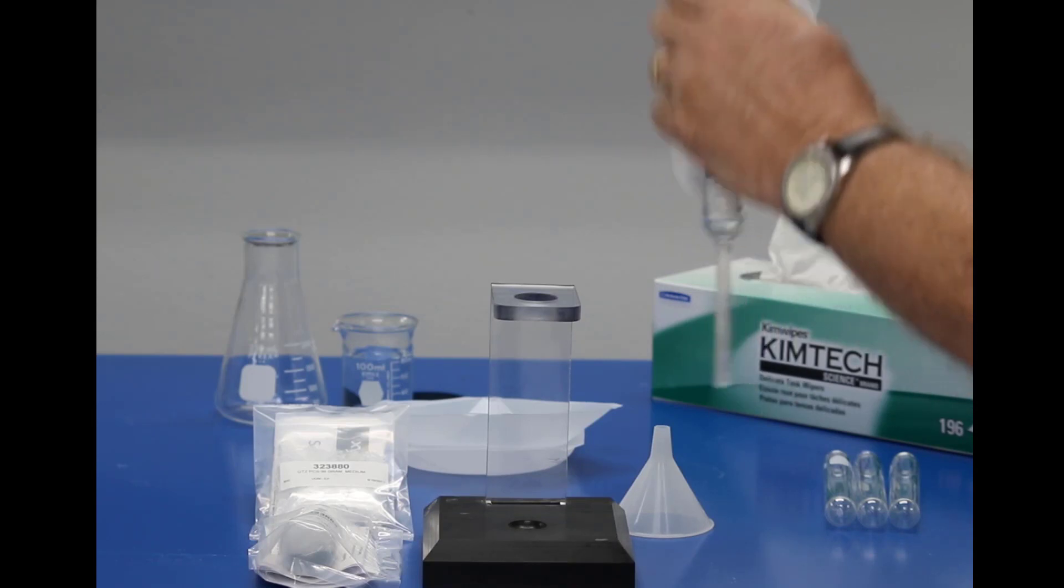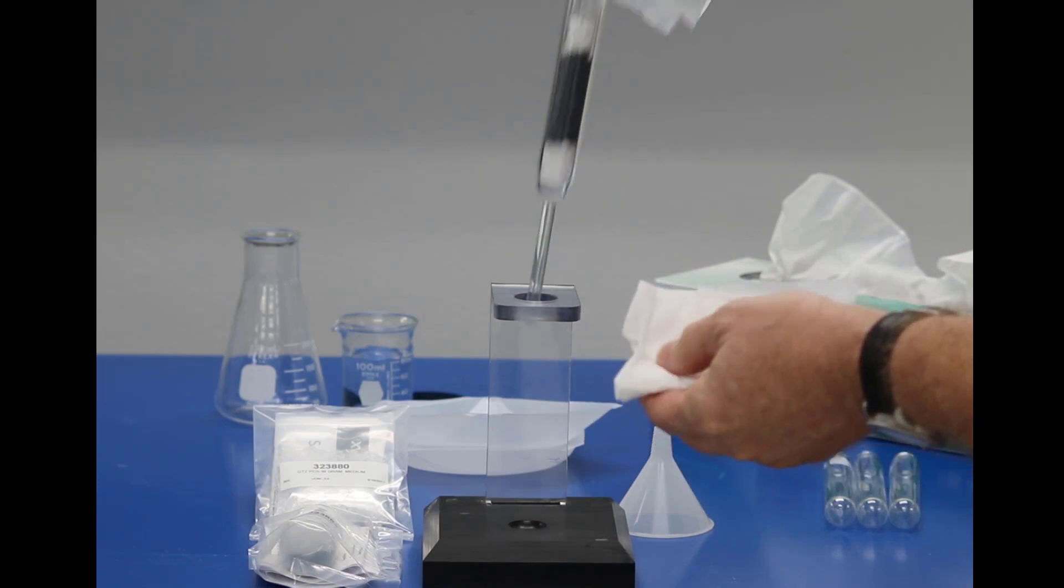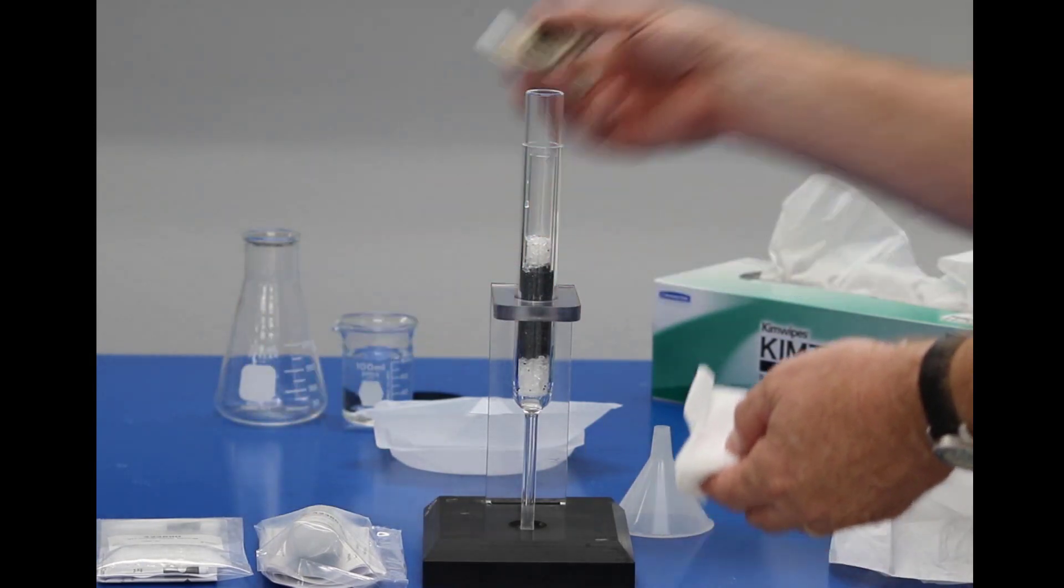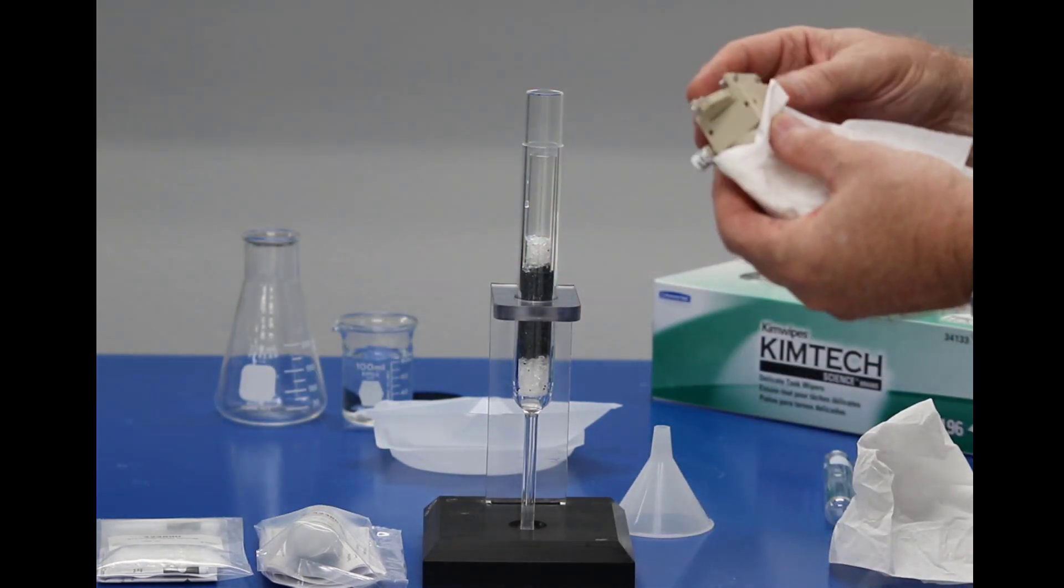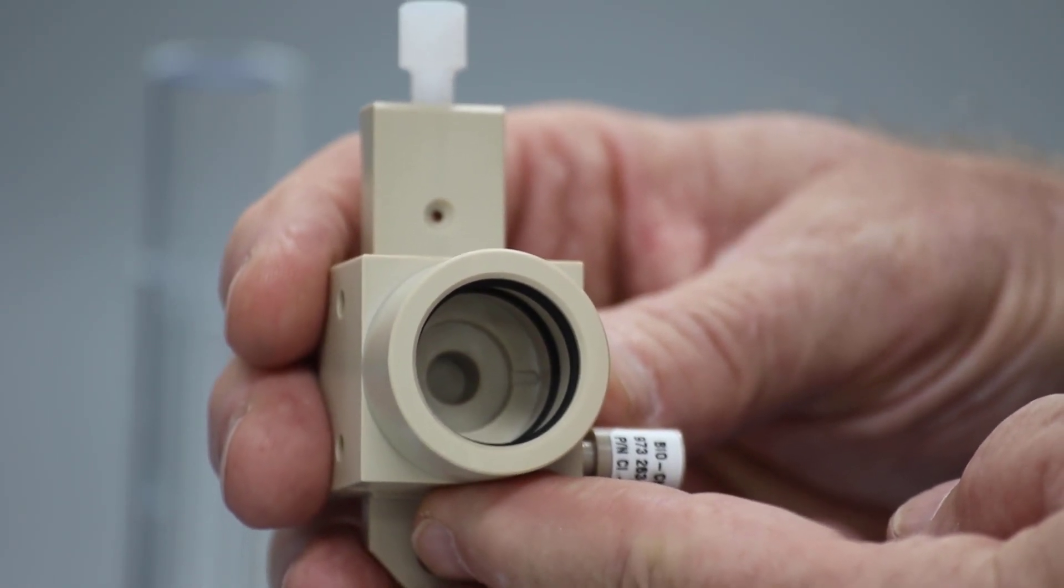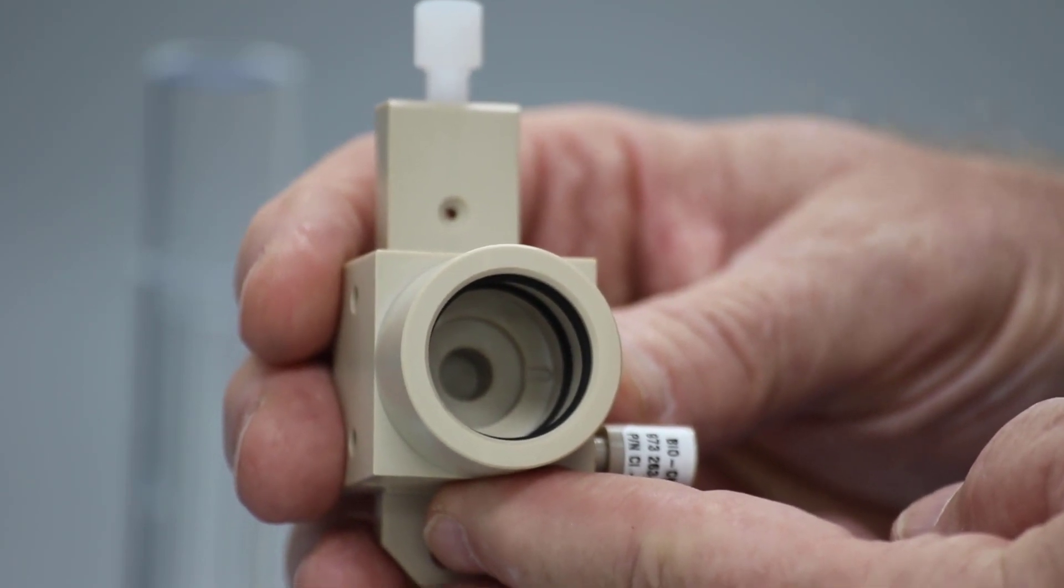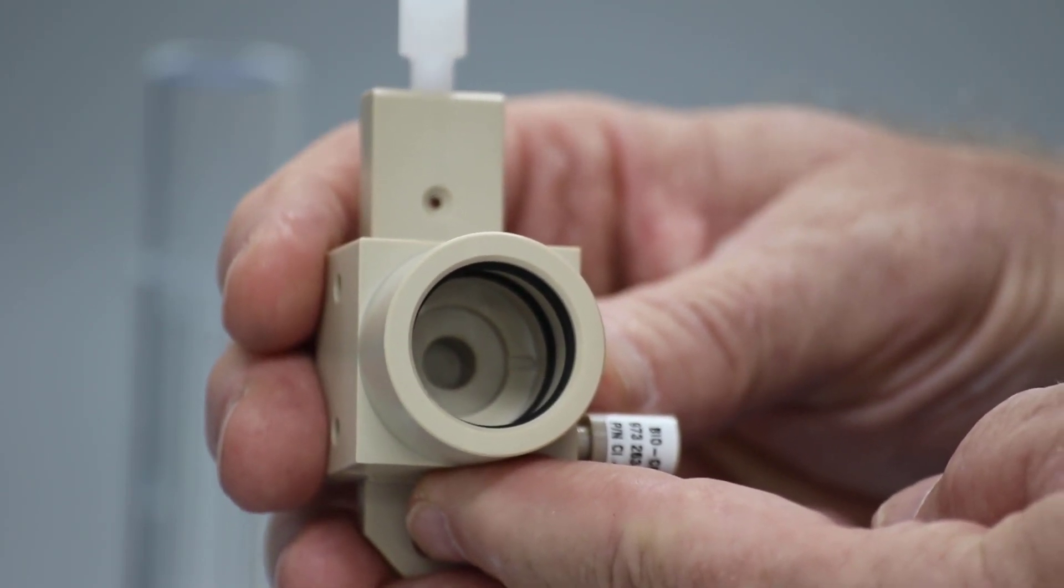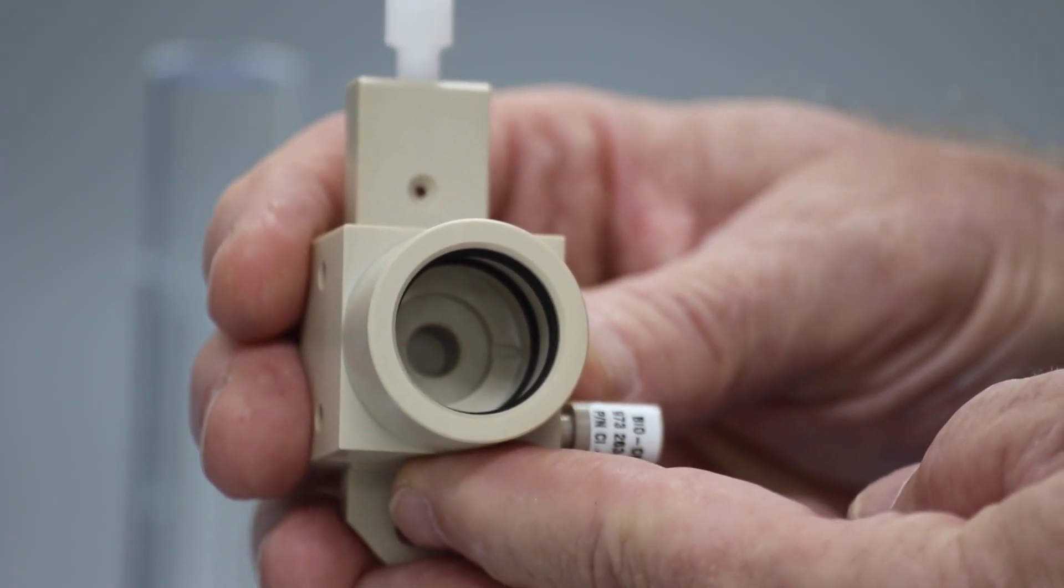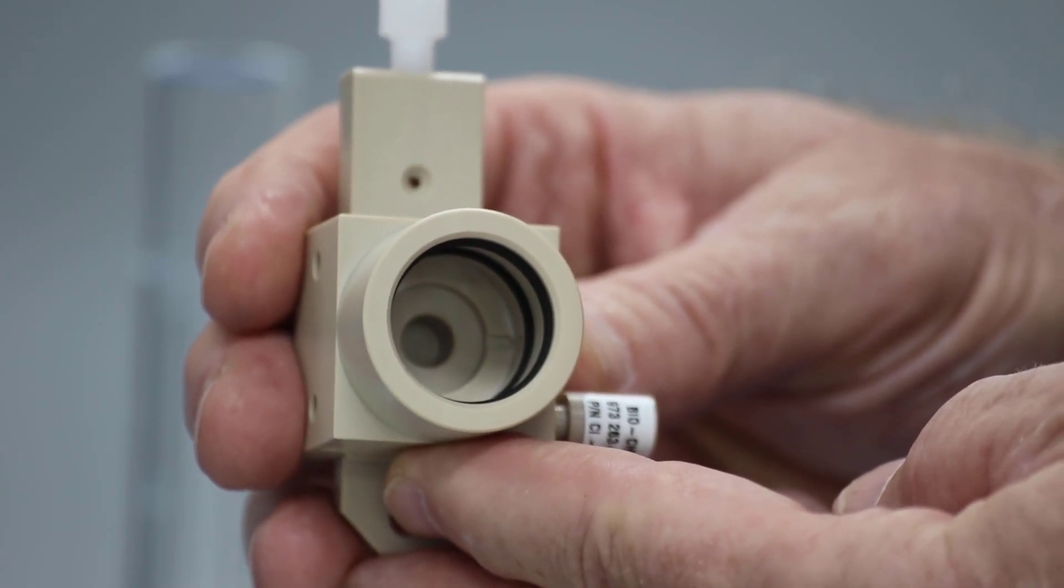And before we install it into the furnace, we will need to install the cap and slider assembly. The cap and slider assembly has two O-rings that you can see inside, and when we install this, we want to ensure that it fits snugly down onto the top of the combustion tube, so that both of those O-rings will seal.